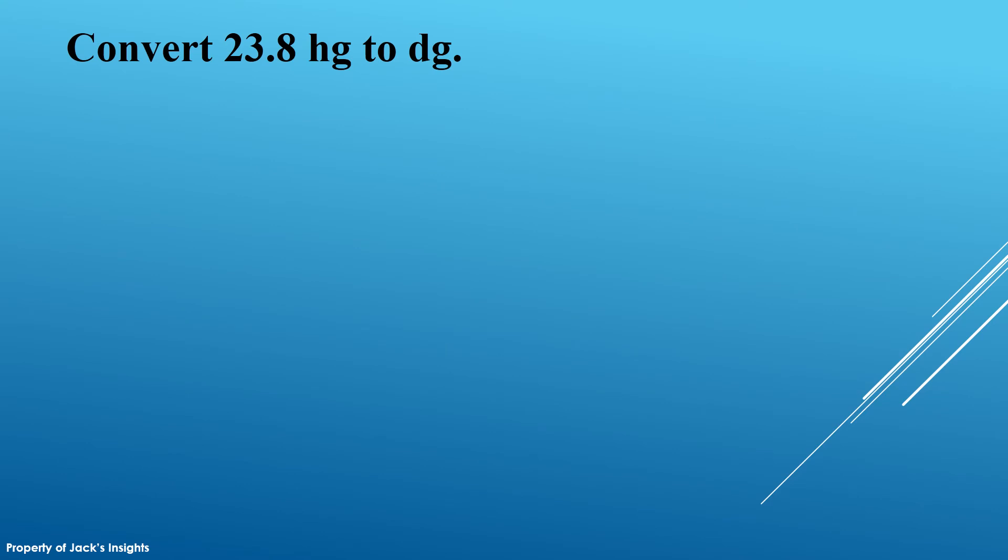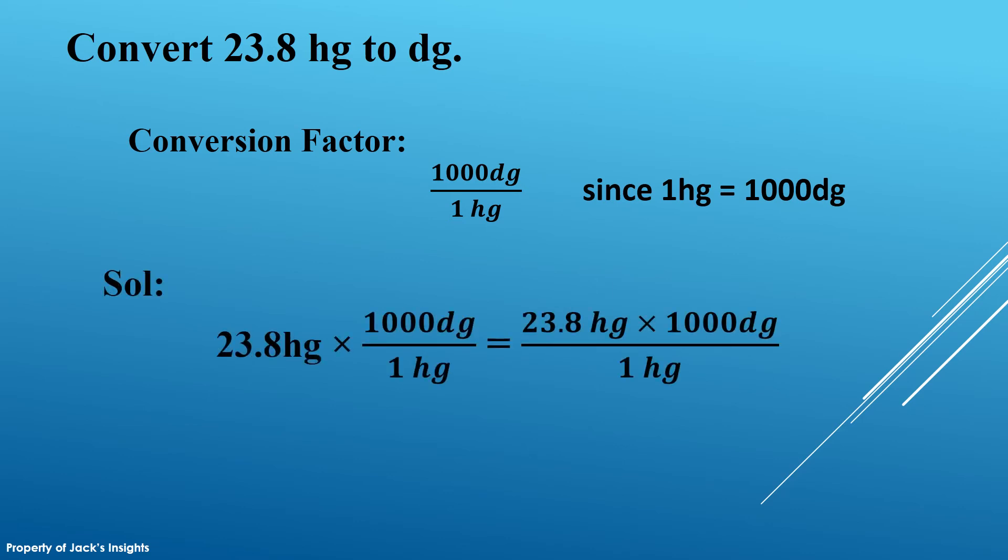Let's have a sample conversion of units of mass. Convert 23.8 hg to dg. This time we will be applying our knowledge about conversion factors. If you want to know the details about conversion factors and other important terms in converting units, then try to watch my other videos found in the description below. So, the conversion factor for this conversion is 1000 decagram over 1 hectogram. Hectogram is in the denominator since that is the symbol to be cancelled out. Do the factor label method, so the answer is 23,800 decagrams. The conversion under the international system is as easy as that.